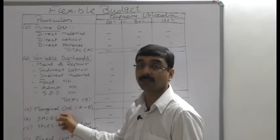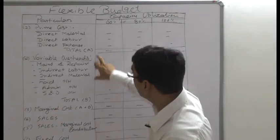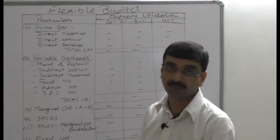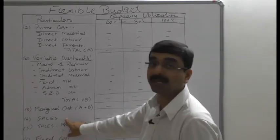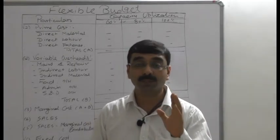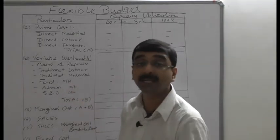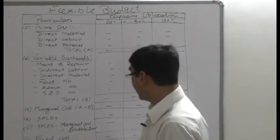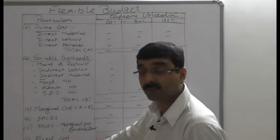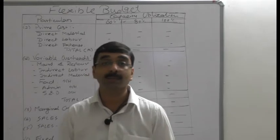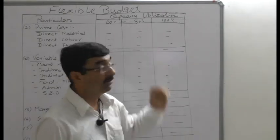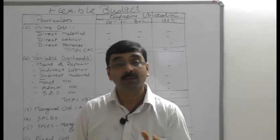The marginal cost is the total amount of variable cost — the total of prime cost and variable overheads. The marginal cost is compared with sales to find out the contribution: sales minus marginal cost equals contribution. After determining contribution, the fixed cost — segregated from factory, admin, and selling and distribution overheads — is deducted from contribution, and the final result is profit or loss at different capacity utilizations.